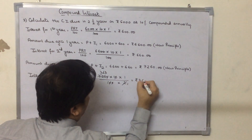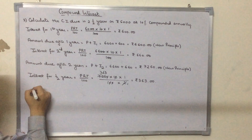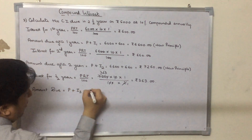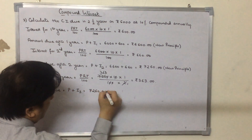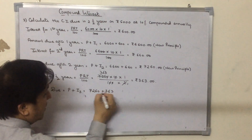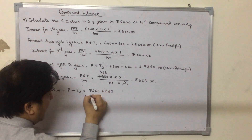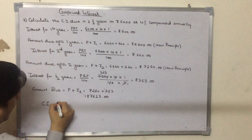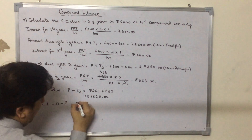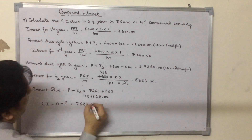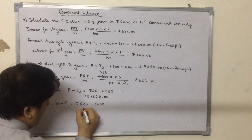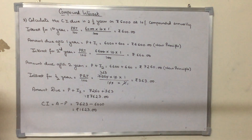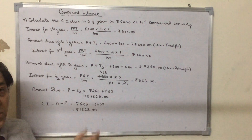So we get the interest as 363 rupees. We find the amount due, which is P plus I3: 7260 plus 363, which is 7623 rupees. Now we calculate the compound interest, which will be amount minus principal: 7623 minus 6000, which is 1623 rupees. So the compound interest in this case is 1623 rupees.